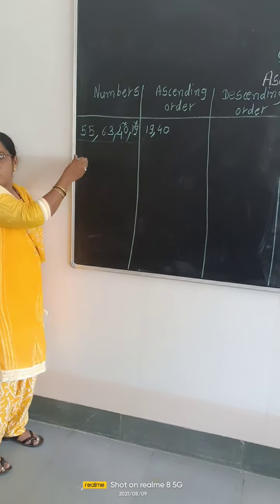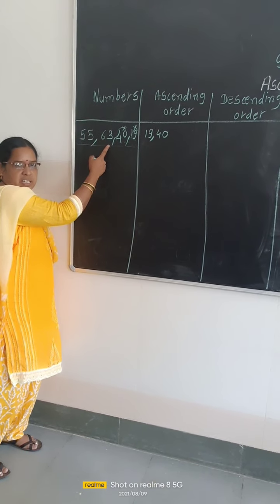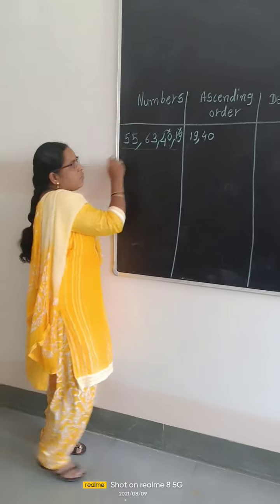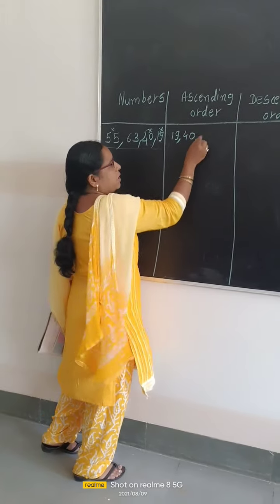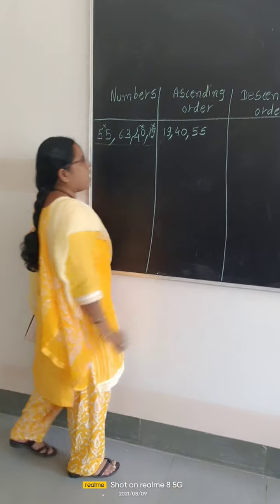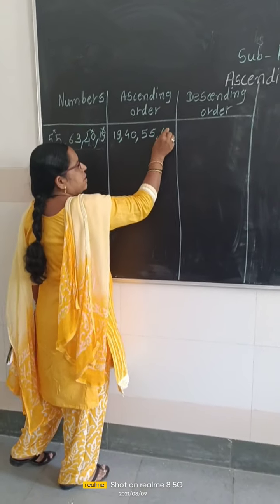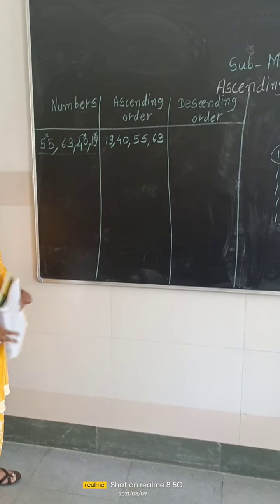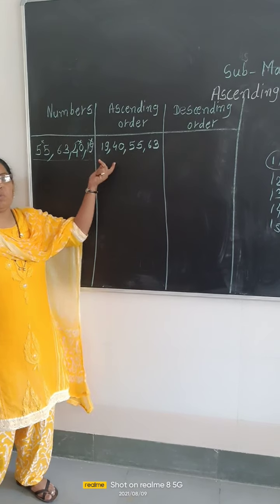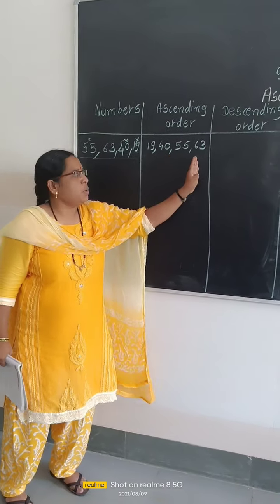Now, remaining are only two numbers: 55 and 63. Which is the smaller number from these two? 55. So we write 55 here. And lastly, the bigger number is 63. This is the ascending order — here we arrange numbers from smallest to bigger.